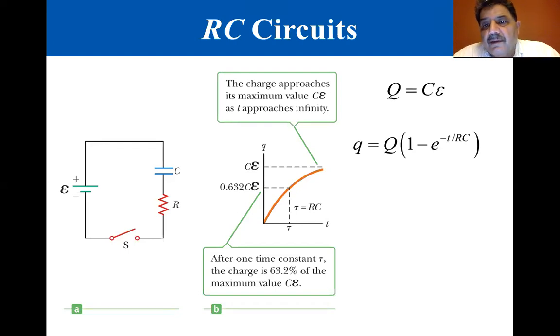q equals Q times 1 minus e to the minus t/RC, where e is Euler's constant, the base of the natural logarithm. The figure on the right is a graph of this equation. The charge is zero at t equals zero and approaches its maximum value Q as t approaches infinity.